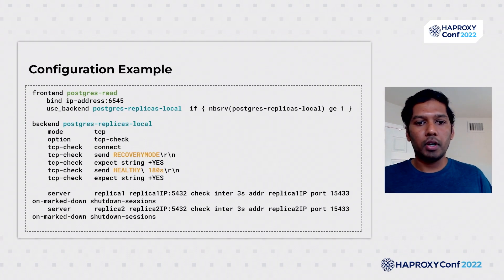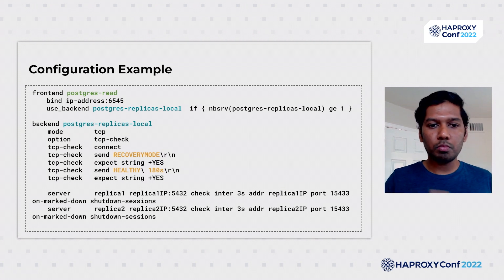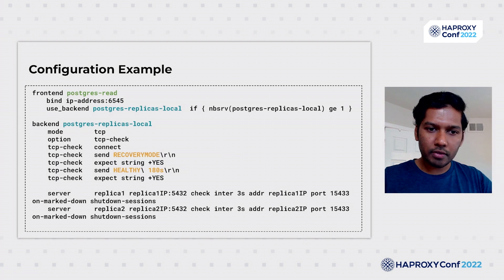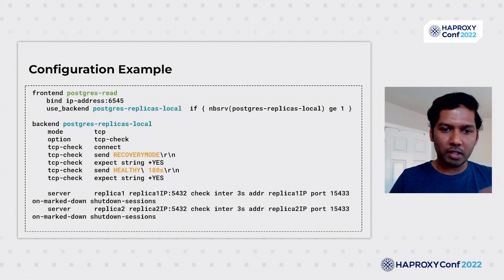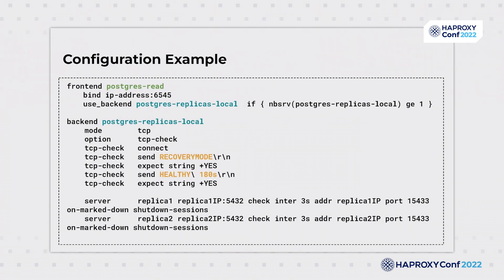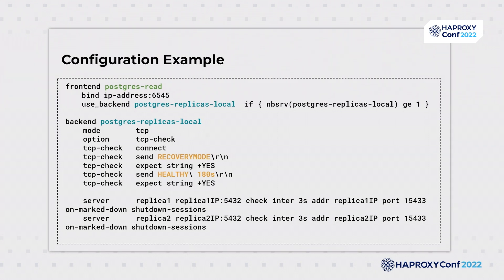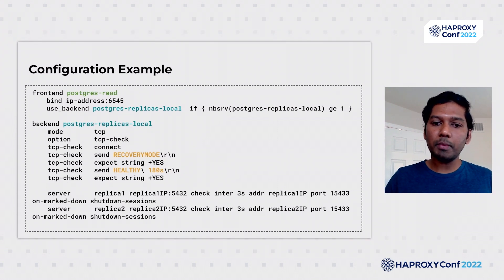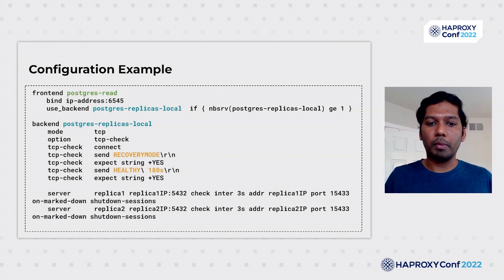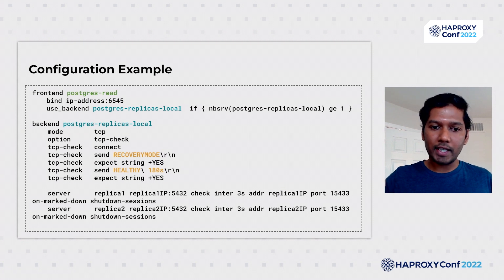Here is a quick example of a configuration. There is a frontend called Postgres read, and the backend is Postgres replicas local. Connections from PG Bouncer are sent to this HAProxy frontend, which then forwards the connection to the backend. Inside the backend, we use TCP check to do some basic checks. The first check sends a message called recovery mode — if a replica gives back the message 'yes', we know it's a replica. The other check is 'healthy' followed by 180 seconds, which defines the maximum allowed replication lag of three minutes. All this message parsing and health checking is done by a small daemon that runs alongside the database servers.